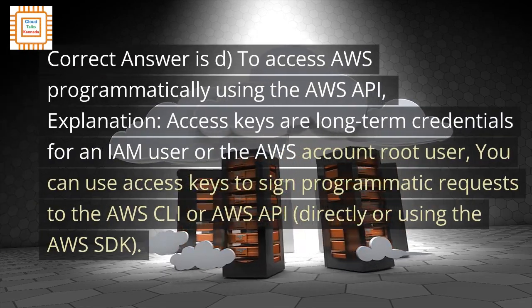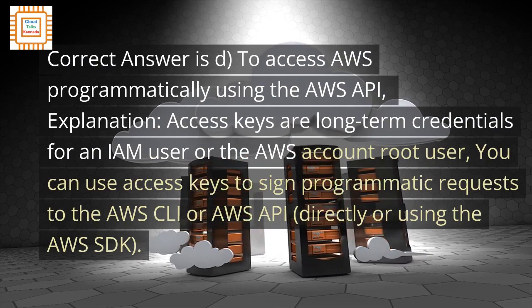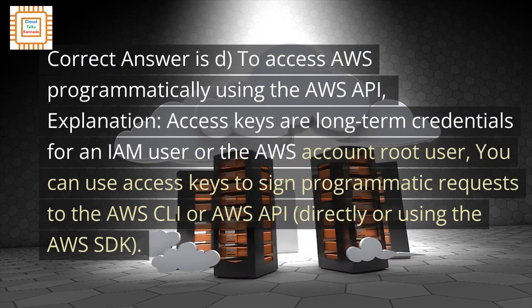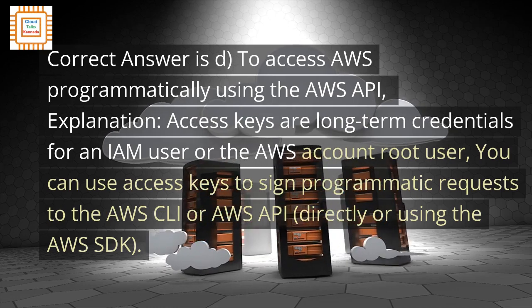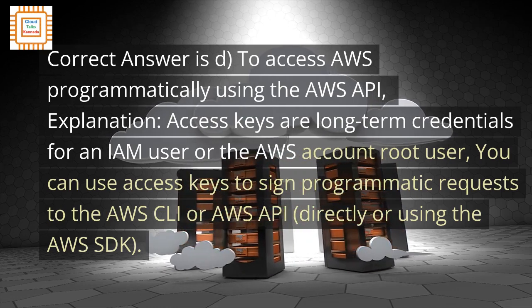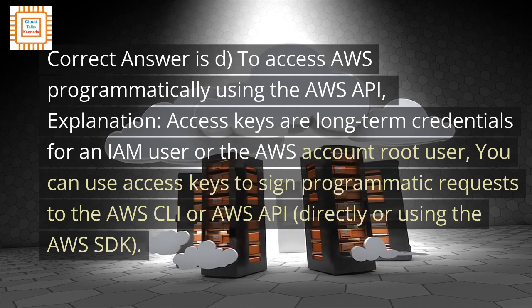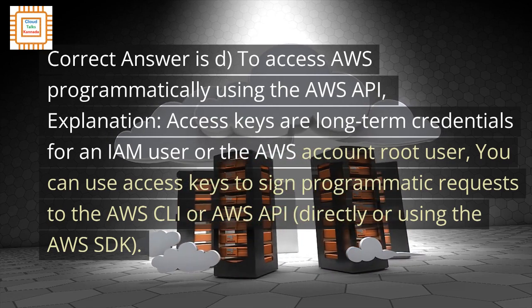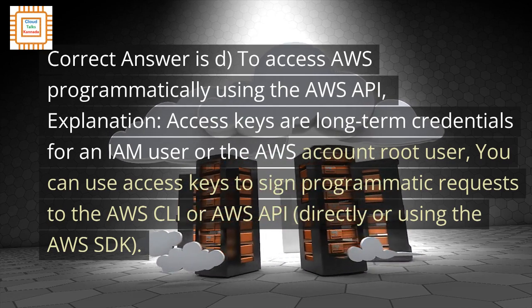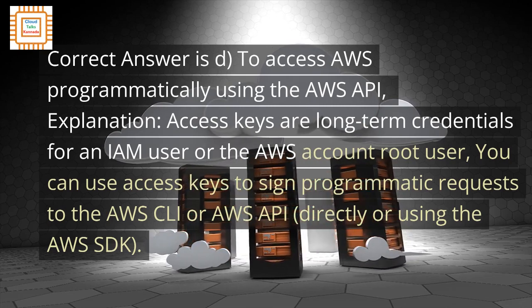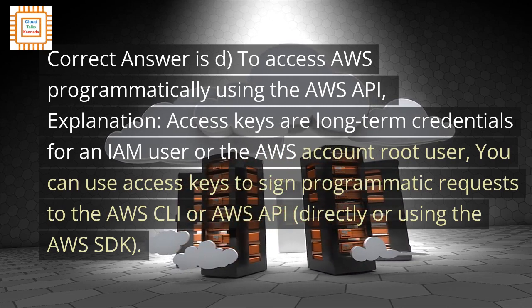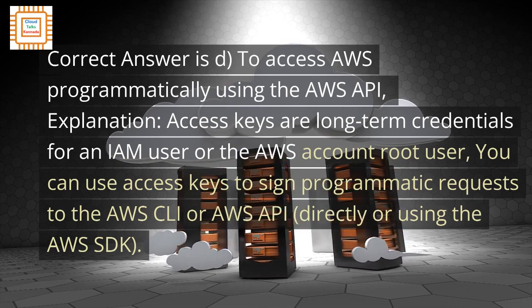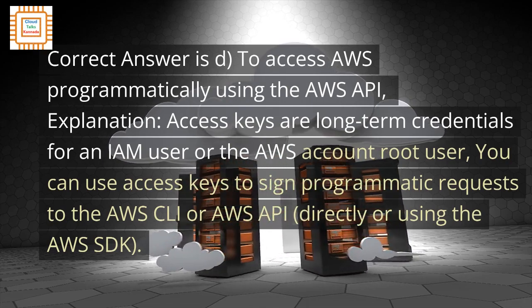The correct answer is D: To sign programmatic requests to the AWS CLI or AWS API. Access keys are long-term credentials for an IAM user or the AWS account root user. You can use access keys to sign programmatic requests to the AWS CLI or AWS API, directly or using the AWS SDK.